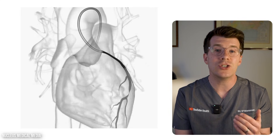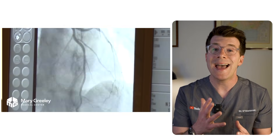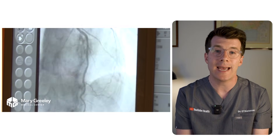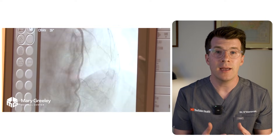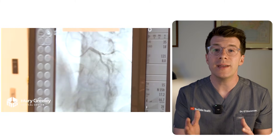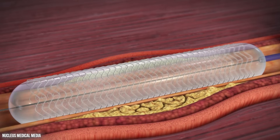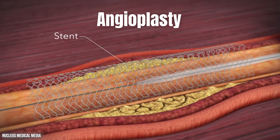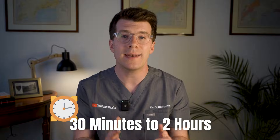A contrast dye is then injected through the catheter, and as the dye flows through your blood vessels a series of x-rays are taken. You might feel a warm flushed sensation when the dye goes in and a brief feeling like you need to pee, but this usually passes quickly. Sometimes treatment can be done at the same time — for example, using a balloon or a stent to open up a narrowed artery, which is called an angioplasty. The whole procedure can take anywhere from 30 minutes to two hours depending on the individual.